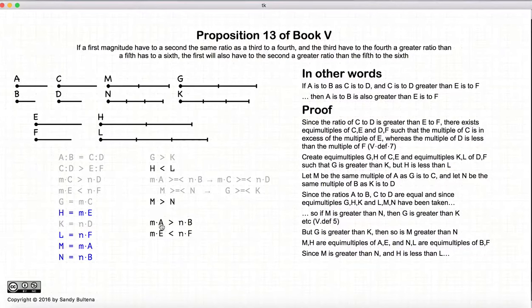Well, m is m times a, n is n times b, h is m times e, and l is n times f. So we have m times a is greater than n times b, m times e is less than n times f.